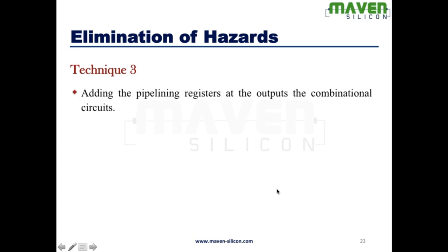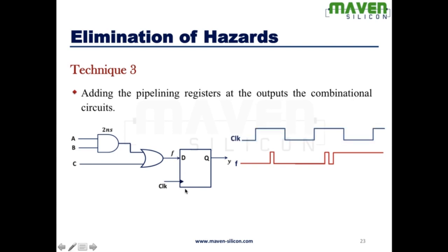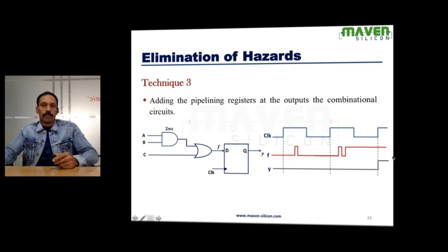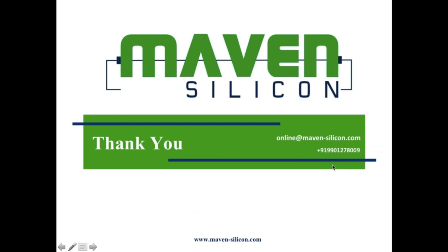And what else you can do? You can register the output. Look at the circuit. Here, F is the output. Because of the difference in delays, you get these glitches at the output. What I am going to do is, I am going to register this output using a flip-flop. Now, the flip-flop is going to sample the output only at the clock edge. Look at here. It's going to sample the output only at the clock edge and it's going to produce the stable output like this. So, obviously, it's going to discard all these glitches. This is how you can eliminate these hazards. Thank you.